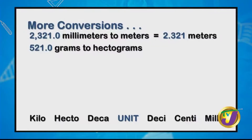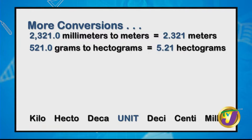Now try this: convert 521 grams to hectograms. Identify where you are — grams — where you need to go — hectograms — and count the units in between: just 2 units. So we divide by 100, giving us 5.21 hectograms.